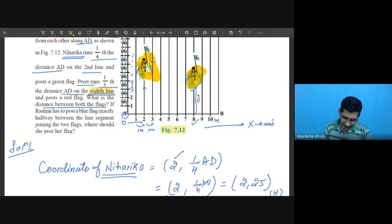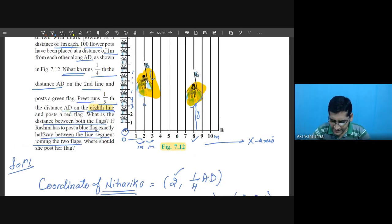So one thing we have calculated, distance between the two flags same as distance between the two students. And if Rasmi has to post a blue flag exactly halfway the line joining between the two flags, what we are getting here student, Niharika is at 2, 25, Preet is at 8, 20. If I'm considering this is a flag, distance.